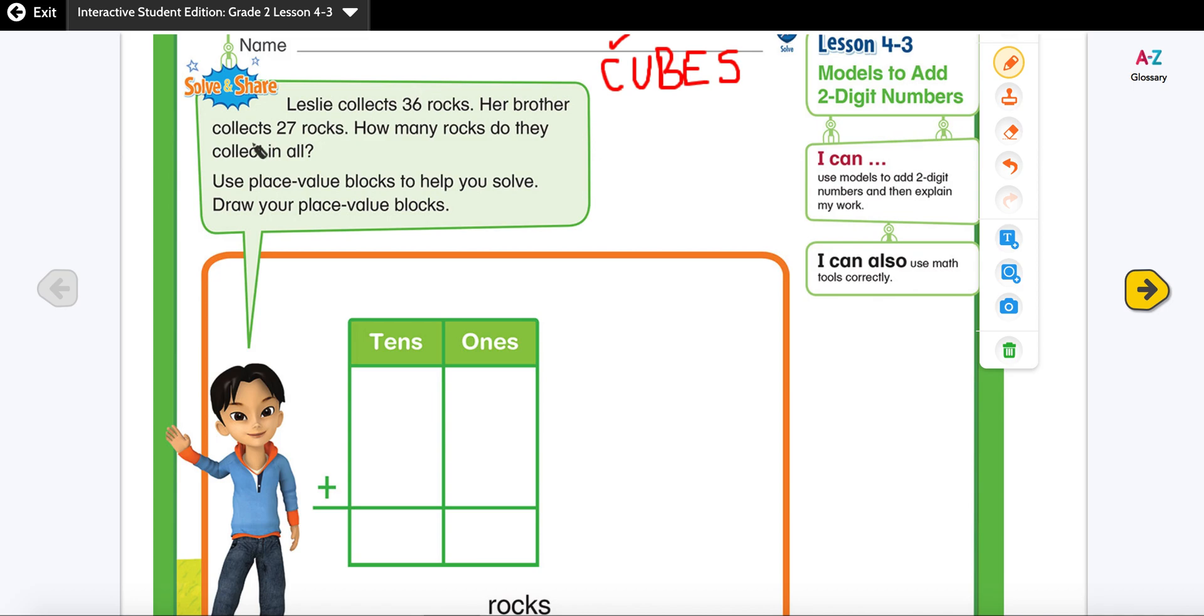So let's look at our solve and share. Leslie collects 36 rocks. 36 is a number, we're going to circle it. Her brother collects 27 rocks. We're going to circle the number 27.